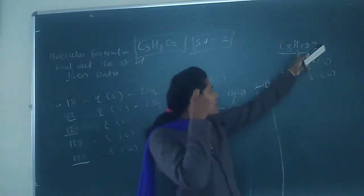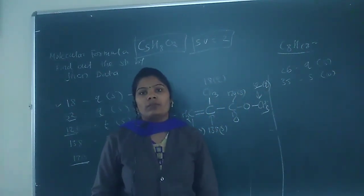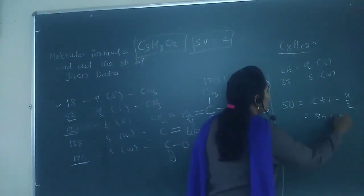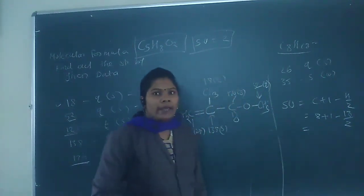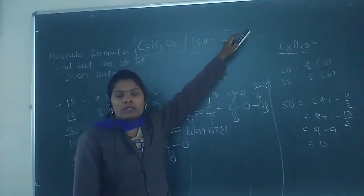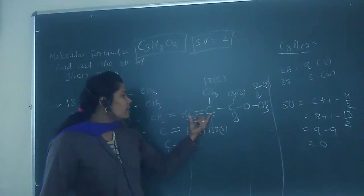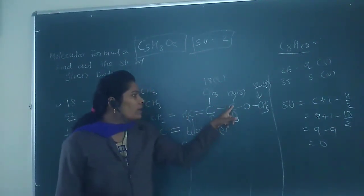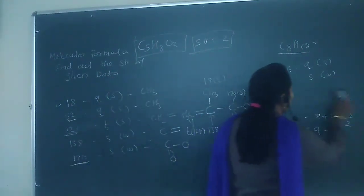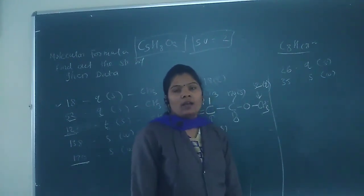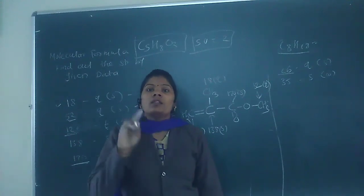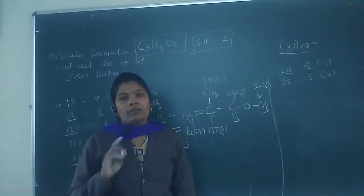Next example: molecular formula C8H18. Calculating sites of unsaturation: C + 1 − H / 2 = 8 + 1 − 18 / 2 = 9 − 9 = 0. So there are zero sites of unsaturation — no double bonds at all. The carbon-13 data gives only two values, meaning only two carbons have different environments and the rest are equivalent due to molecular symmetry.